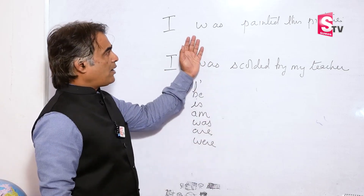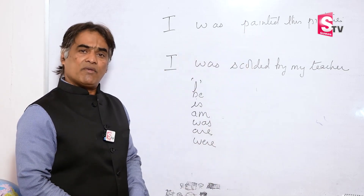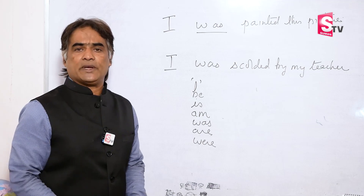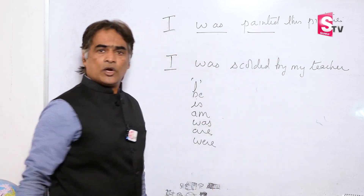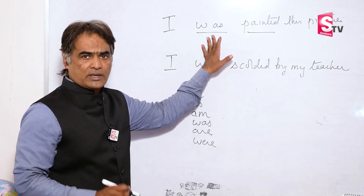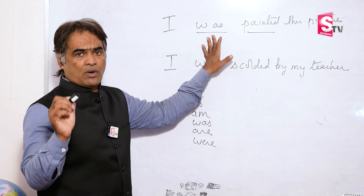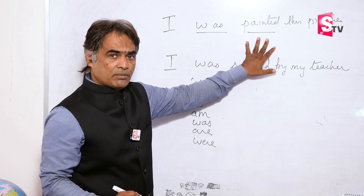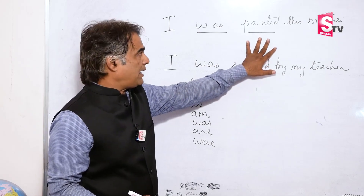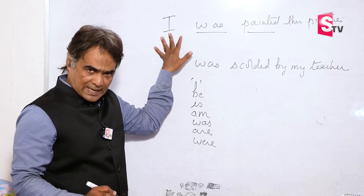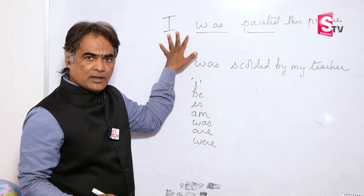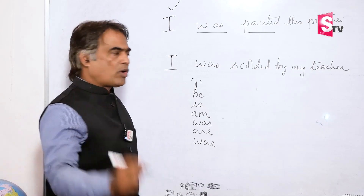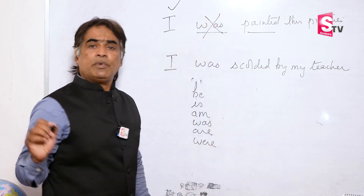Let's take the first sentence: 'I was painted.' The B form of verb here is 'was.' The other verb here is 'painted.' To understand whether the B form of verb is required here or not, you have to ask: this action of painted — has it been done by the subject 'I'? Yes, this action of painting has been done by I. So when this action is done by I, we do not require a B form of verb.